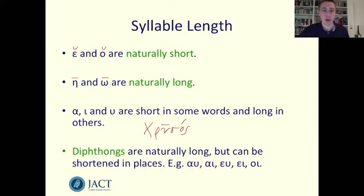In Greek there are also a large number of diphthongs. A diphthong is when two vowels fuse together into one. For example, alpha plus upsilon creates the sound 'au' and alpha plus iota the sound 'ai'. These diphthongs are naturally long, although at the end of a word diphthongs can become shortened by a process I'll mention later.